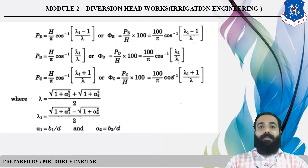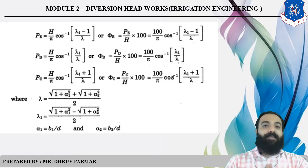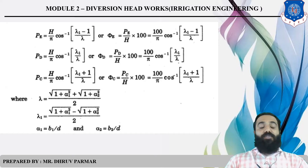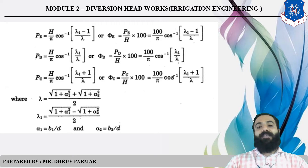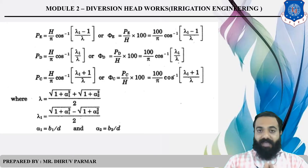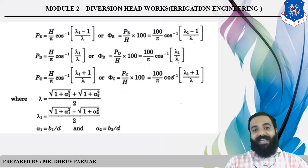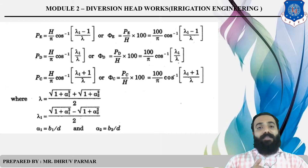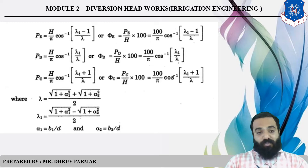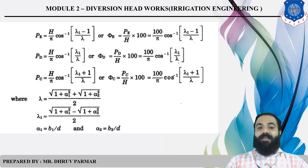To find lambda and lambda₁: λ = (√(1 + α₁²) + √(1 + α₂²)) / 2, and λ₁ = (√(1 + α₁²) − √(1 + α₂²)) / 2. Alpha is found as: α₁ = b₁/d and α₂ = b₂/d.